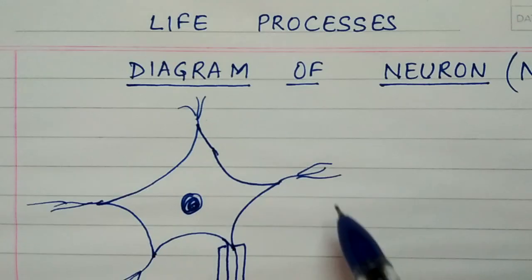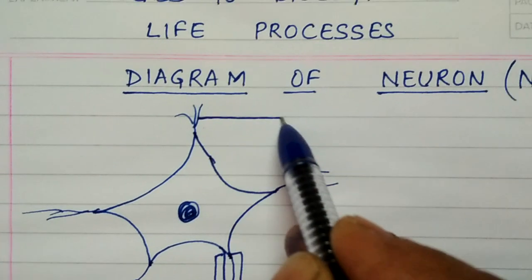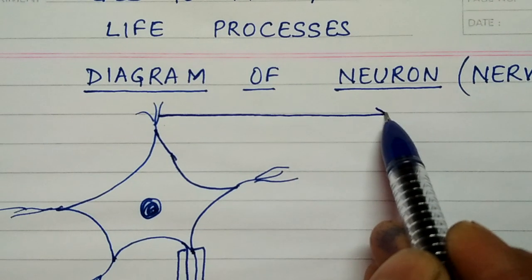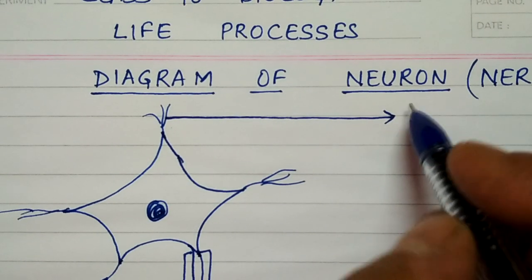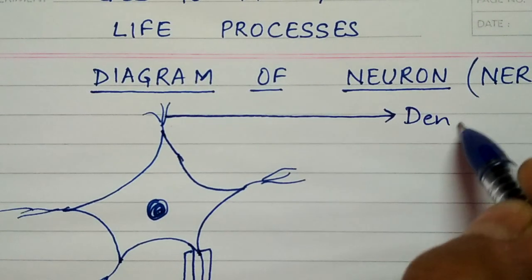Now is a turn for labeling. So extend straight lines, parallel lines, so this is dendrite.